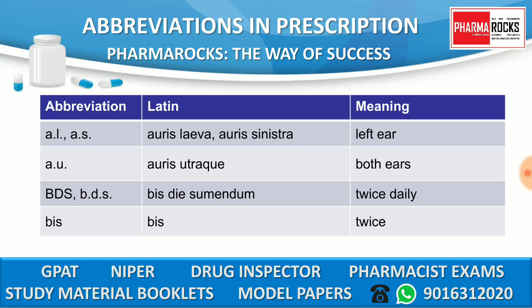AQUA DEST means 'aqua destillata,' meaning distilled water. AL (A dot L dot) and AS (A dot S dot) mean 'auris laeva' and 'auris sinistra' respectively, both meaning left ear.